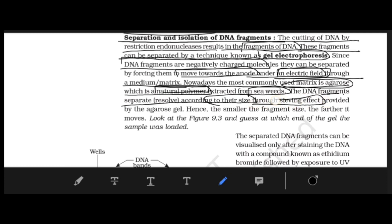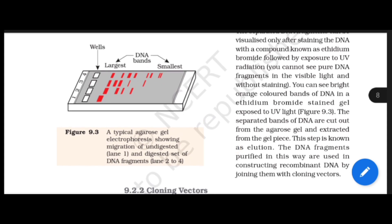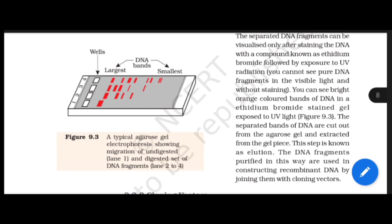Smaller fragments move farther. Looking at the diagram with lanes 1, 2, 3, 4 — the smallest fragment in lane 4 migrates the farthest toward the anode. Lane 1 shows undigested DNA (very large molecule that barely moved). Lanes 2, 3, and 4 show digested sets of DNA fragments separated by size.